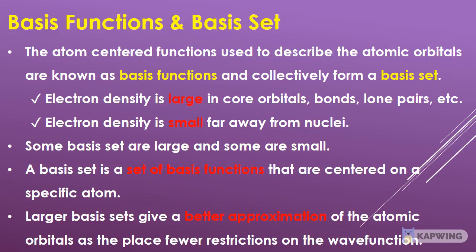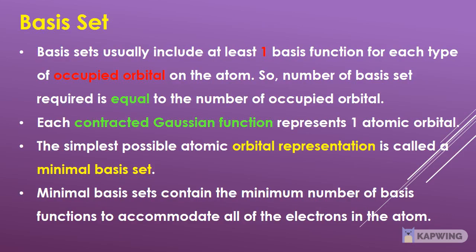Larger basis sets give a better approximation of the atomic orbitals as they place fewer restrictions on the wave function, but larger basis sets also attract a higher computational cost. Basis sets usually include at least one basis function for each type of occupied orbital on the atom, so the number of basis functions required equals the number of occupied orbitals.